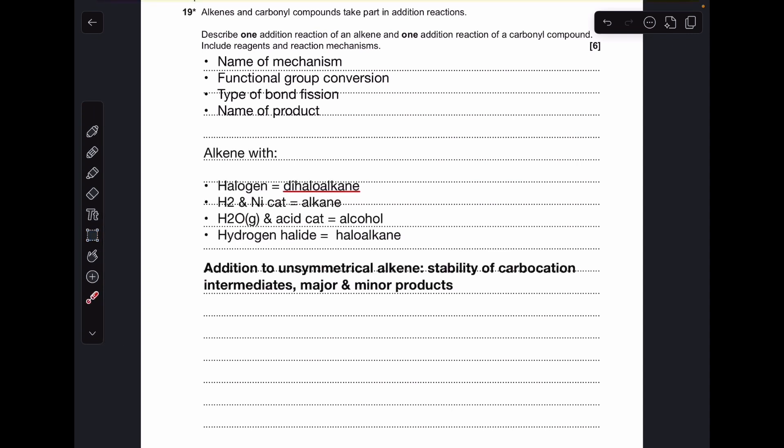In terms of the alkene reaction, there's quite a few options we can choose from. We could go for a halogen with an alkene, that's going to give us a dihaloalkane. We could react the alkene with hydrogen and a nickel catalyst, that's going to give us an alkane. We could react the alkene with steam and an acid catalyst, that's going to give us an alcohol, and we could also react the alkene with a hydrogen halide, and that's going to give us a haloalkane.